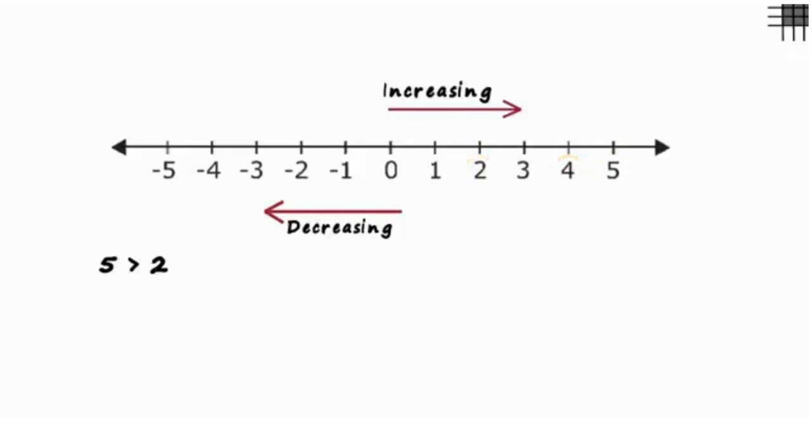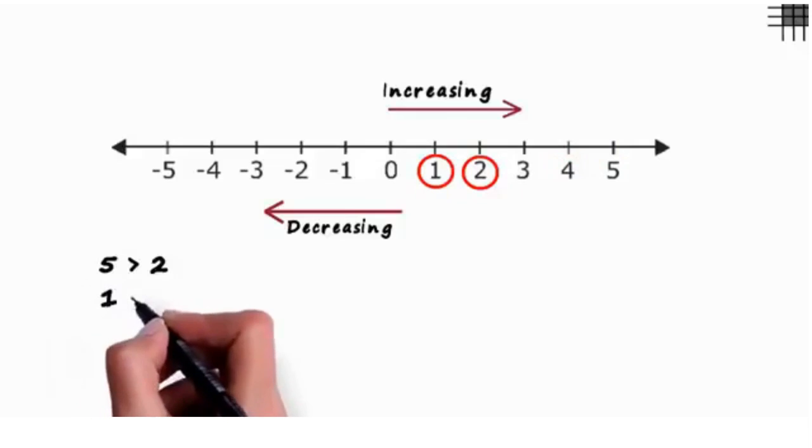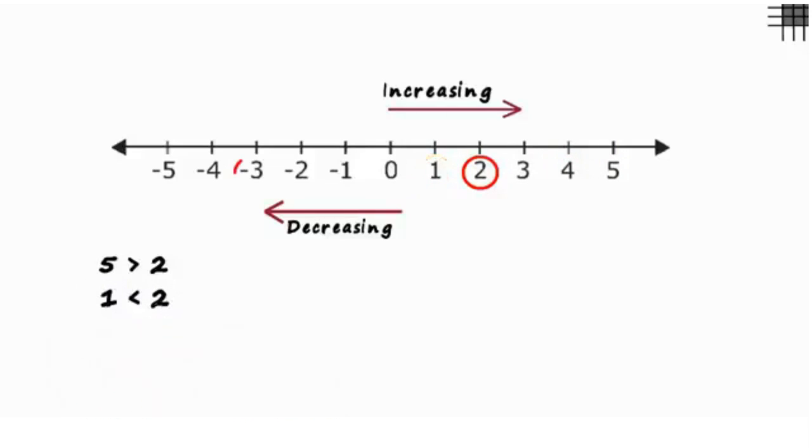If we choose a number to the left of 2, say 1, we can see that 1 is less than 2. Suppose we choose minus 3. Minus 3 is also less than 2.